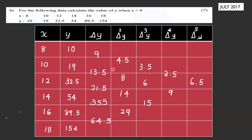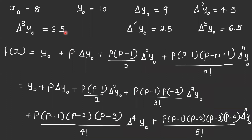The difference table is complete. Reading values at x₀ = 8: y₀ = 10, Δy₀ = 9, Δ²y₀ = 4.5, Δ³y₀ = 3.5, Δ⁴y₀ = 2.5, Δ⁵y₀ = 6.5.